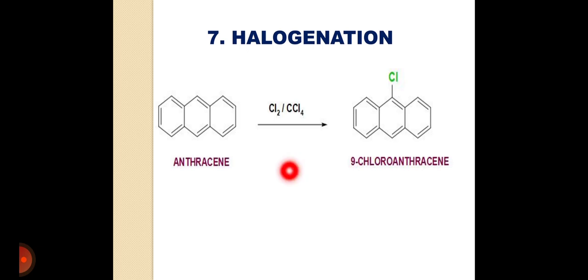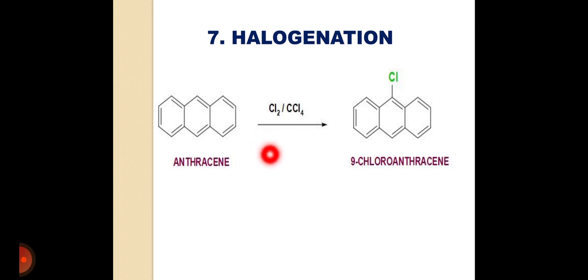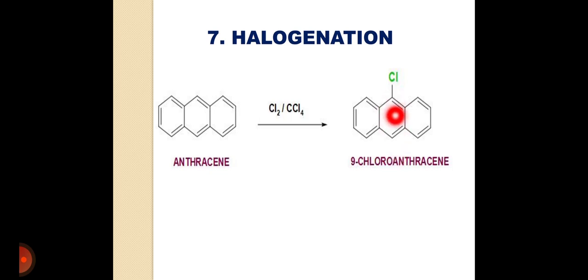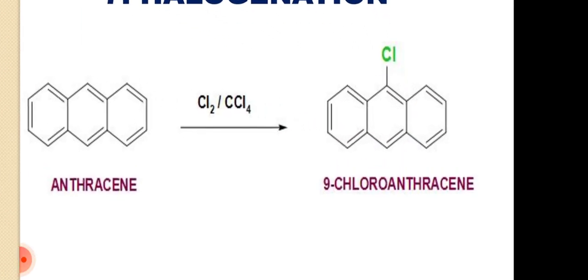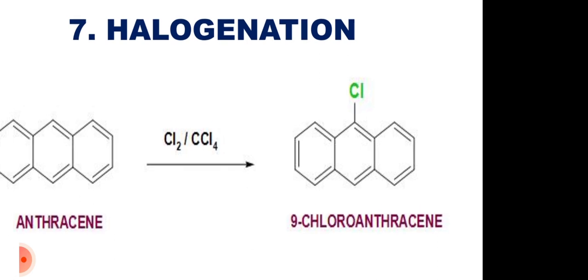The last reaction is the halogenation reaction. Anthracene on reaction with chlorine in the presence of carbon tetrachloride undergoes electrophilic aromatic substitution at position number 9 to give 9-chloroanthracene.